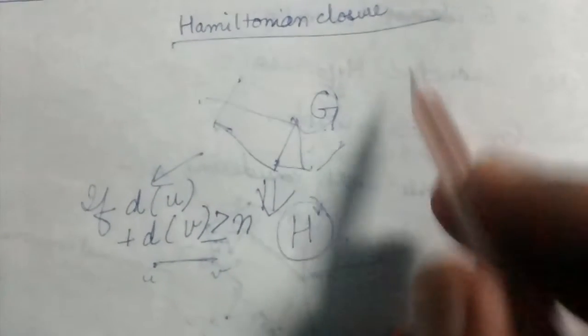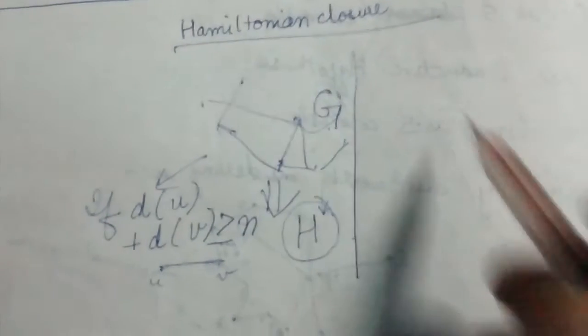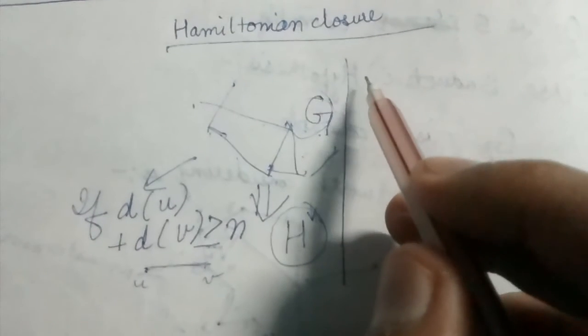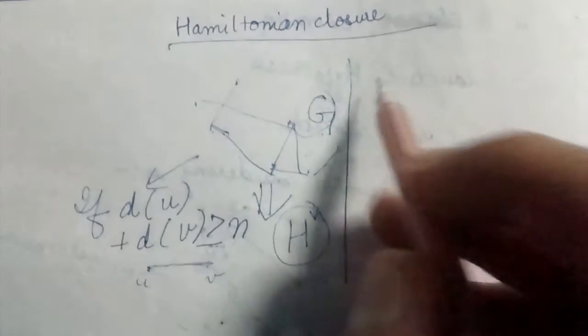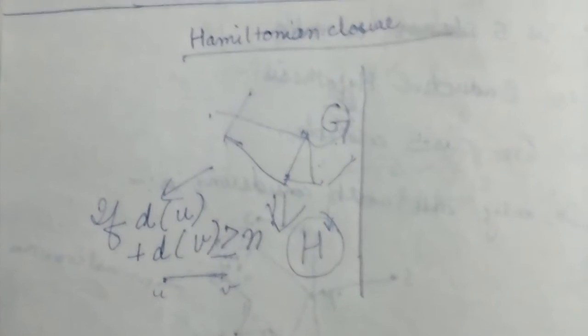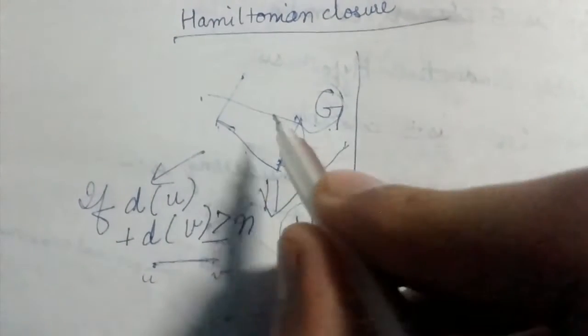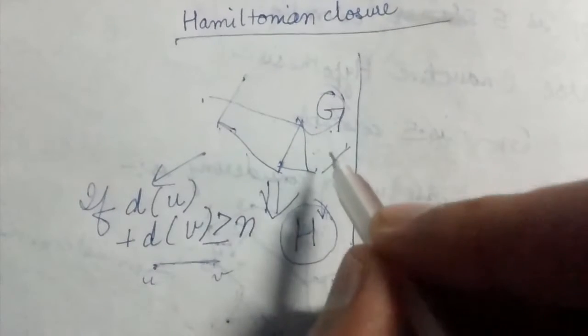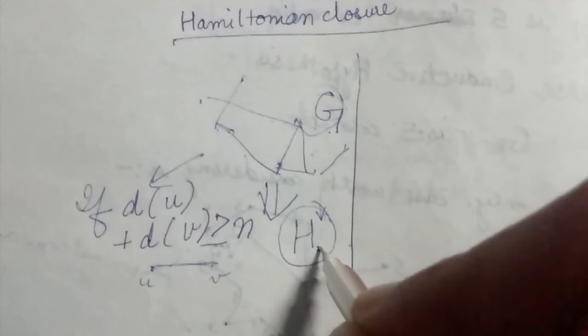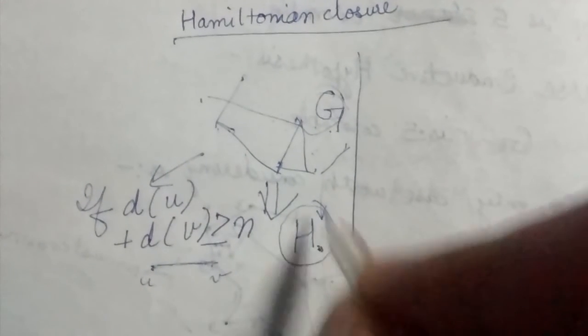And now we would like to prove that the Hamiltonian closure obtained in this way is well-defined. That is, it does not matter in which order you add the edges to the graph G. You will obtain the same Hamiltonian graph or Hamiltonian closure H.